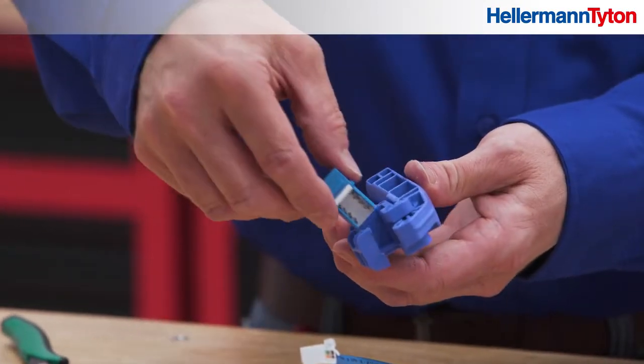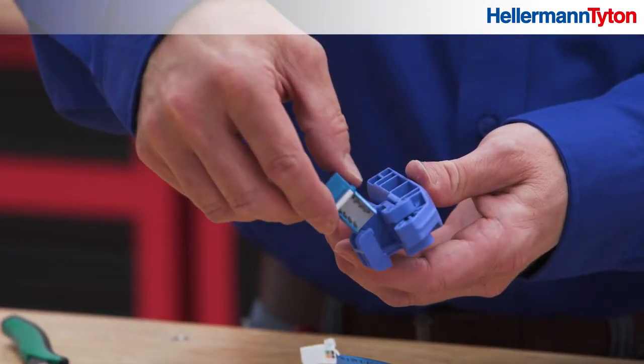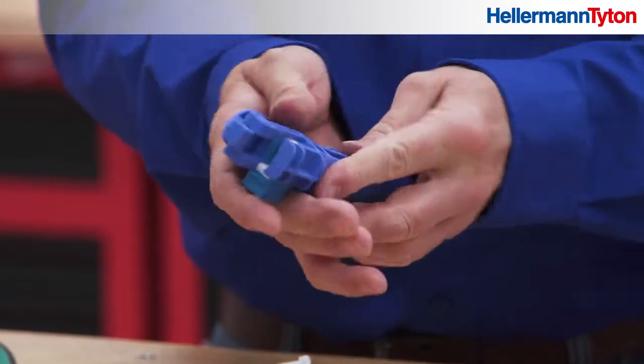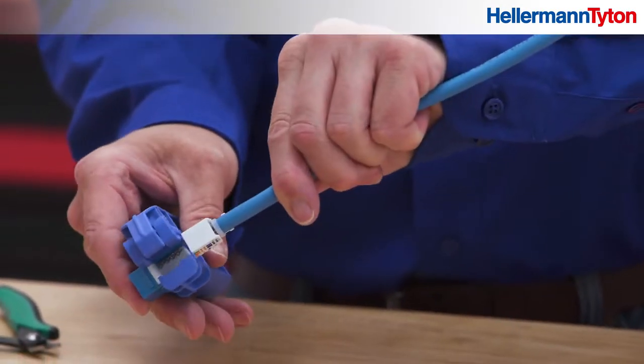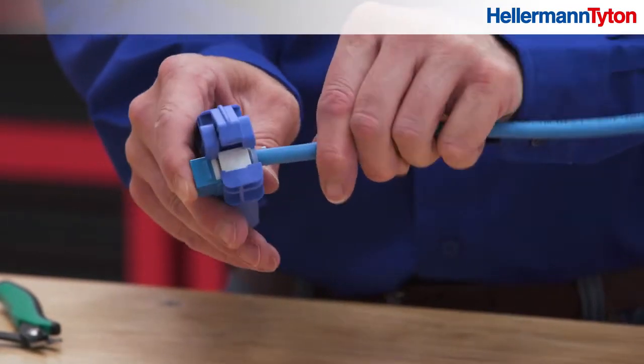Insert the jack body into the tool with the release clip facing down. Press it in until you hear it click. Push the manifold into the tool, wire side down. It will slide into place when it's aligned correctly.